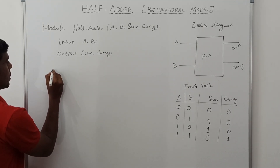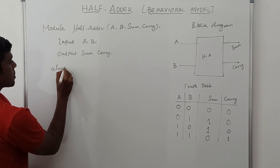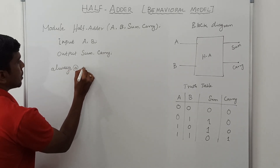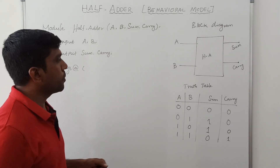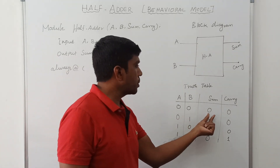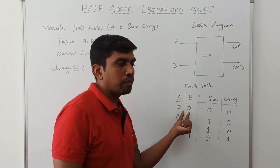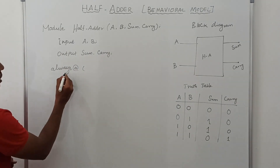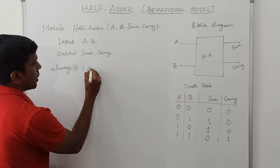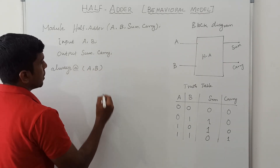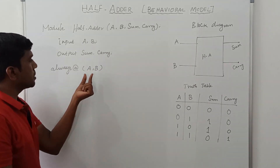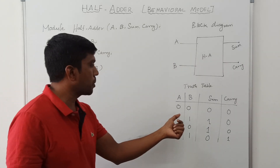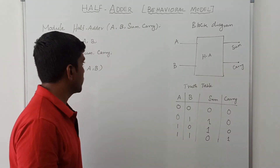Next, write 'always @'. The half adder output changes based on the input variables A and B, so we write 'always @(a, b)'. If any one of these two variables is changed, the corresponding output also changes.